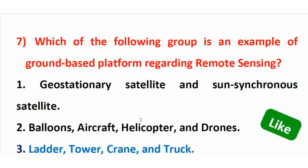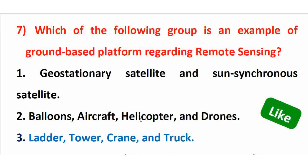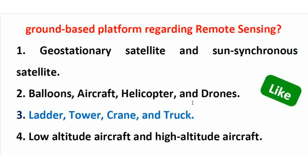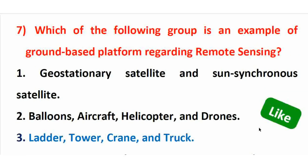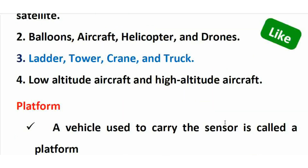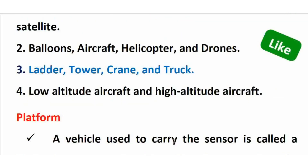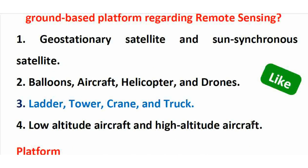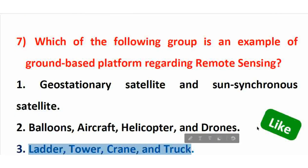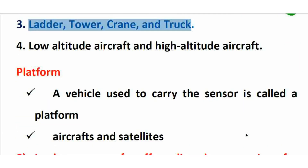Which of the following groups is an example of a ground-based platform in remote sensing? In remote sensing there are three types of platforms: space-bound platforms (e.g., geostationary satellites, sun-synchronous satellites), airborne platforms (e.g., balloons, aircraft, helicopters), and ground-based platforms (e.g., ladder, tower, crane, and tractor). The vehicle used to carry the sensor is called a platform. The right answer is option 3 — the ground-based platform group.